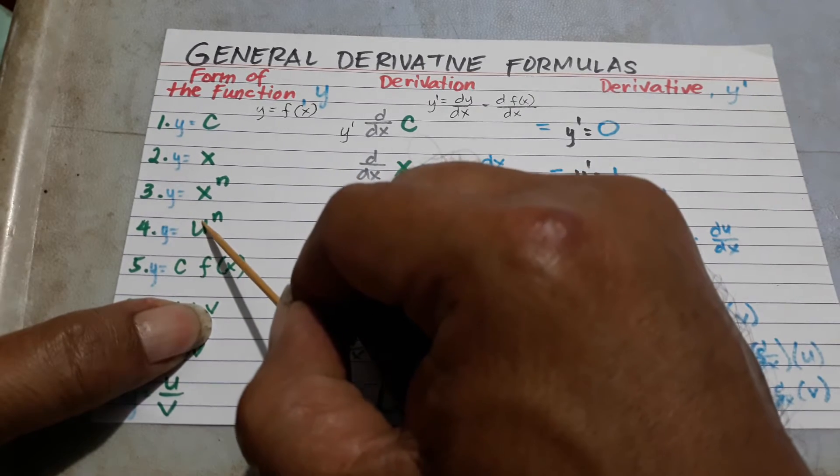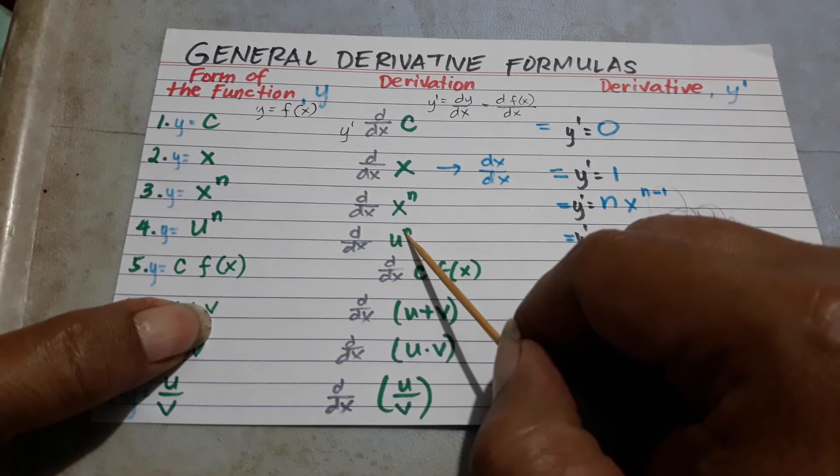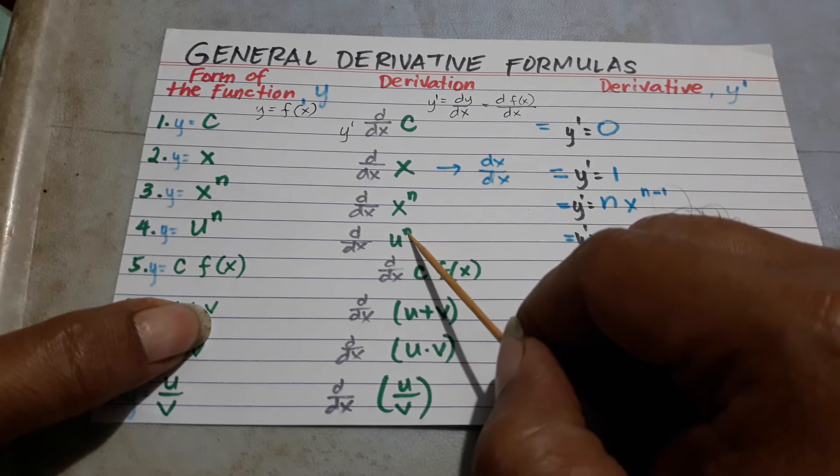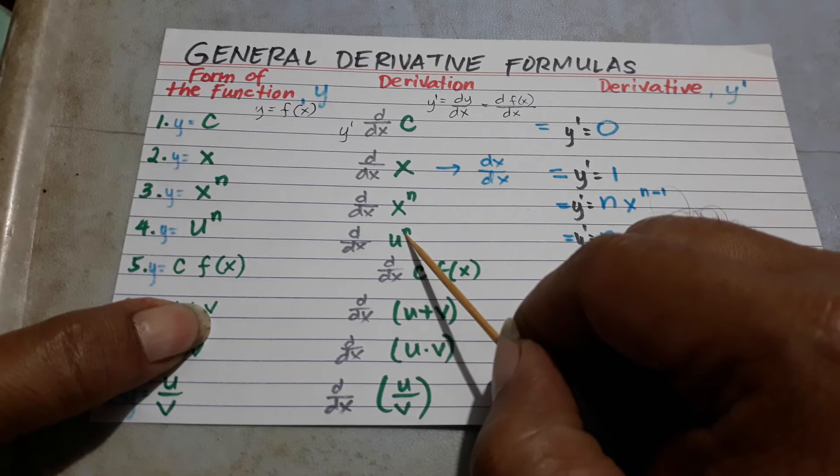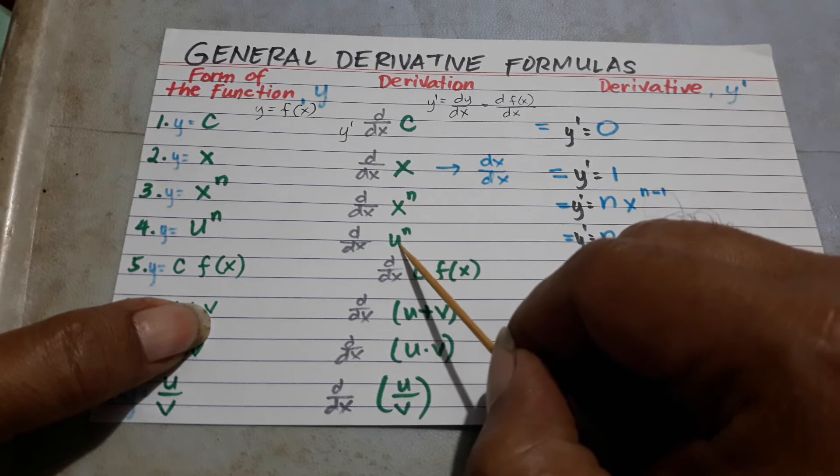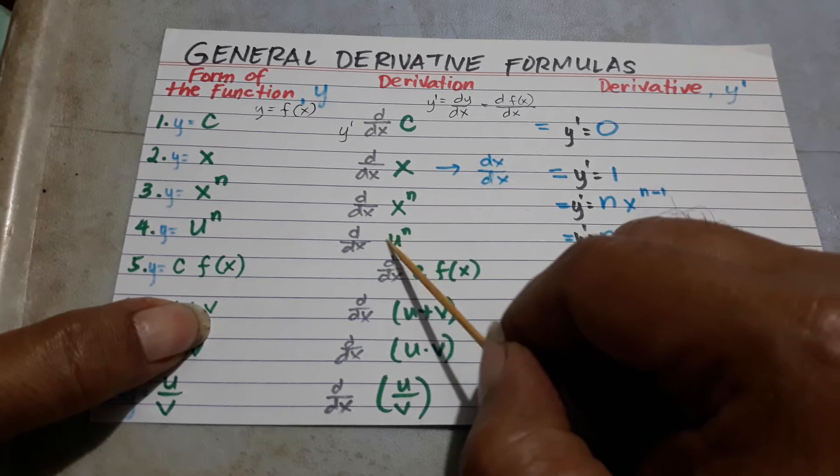So, the derivative of u to the n is you place n to the front, then you subtract 1 from n, then you get the derivative of u.